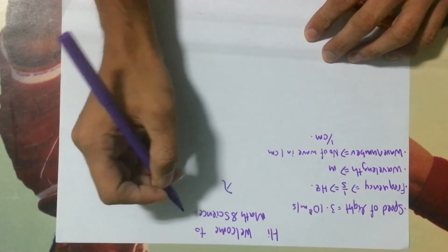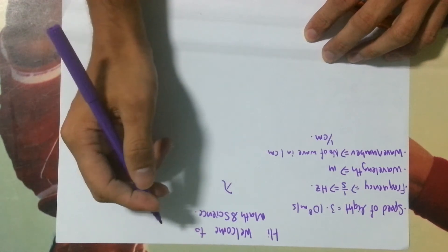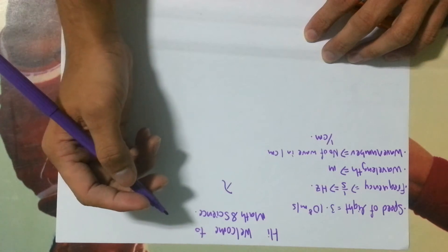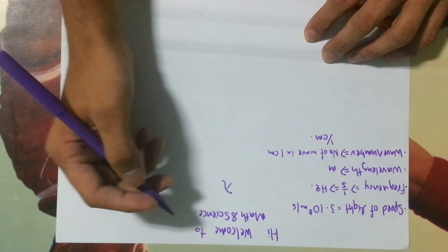Wavelength, what's the relationship between wavelength and wave number? If you are given a wave number and you are asked to find the wavelength, what are you going to do?